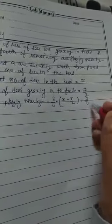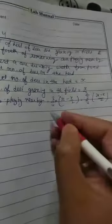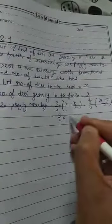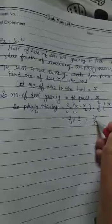Now find its value. 3 upon 4 into 2x minus x upon 2. Take the LCM. 3 upon 4 into x upon 2. That is 3x upon 8.